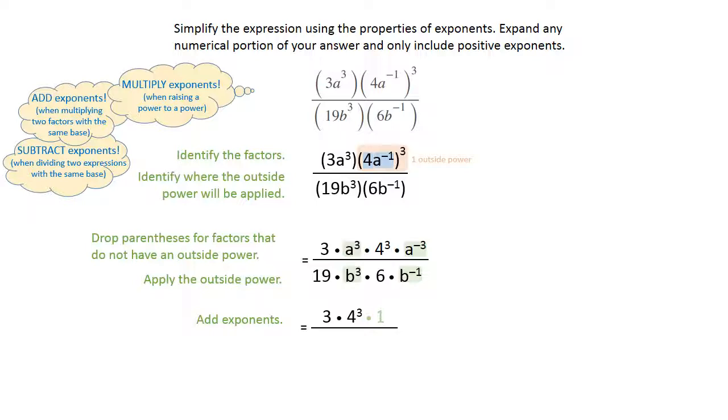When you multiply a one by something, it's going to just end up whatever that something is. So we're going to just have 3 times 4 to the third in our numerator. In the denominator, we have the 19 times the 6, and then let's put the two b's together. Three minus one is two, so b squared.